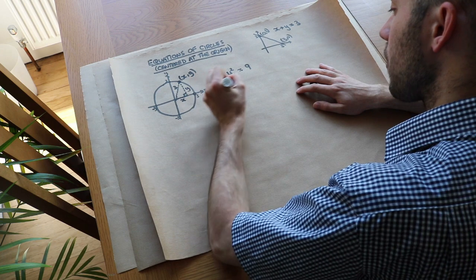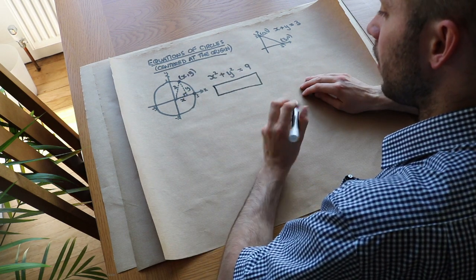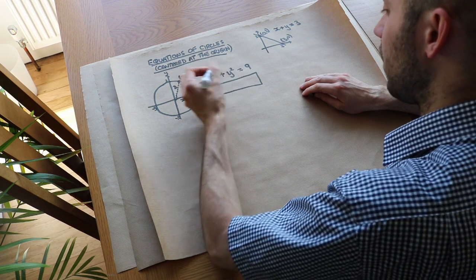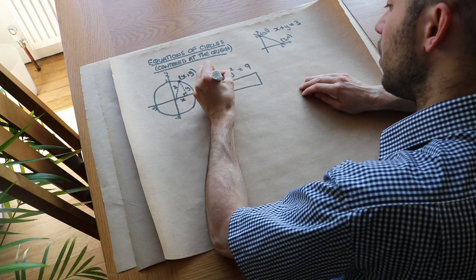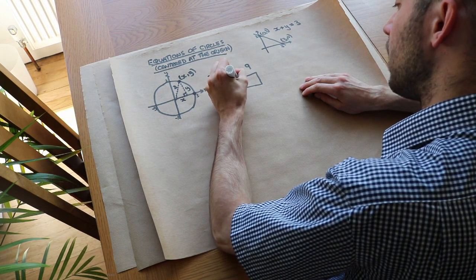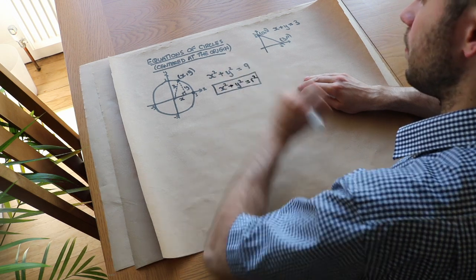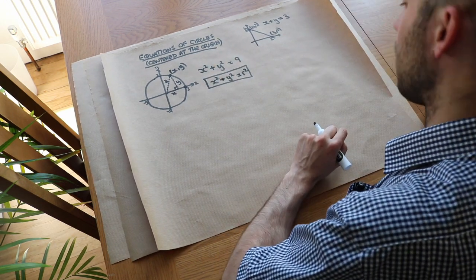And more generally, the equation of a circle which has radius r, in this case the radius was 3 but we could have any radius, that's centered at the origin is x squared plus y squared equals r squared. And that just comes from Pythagoras theorem.